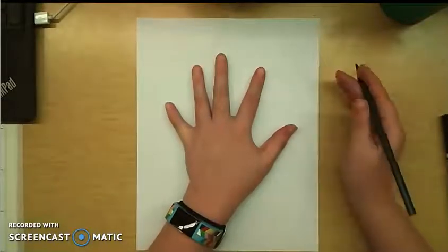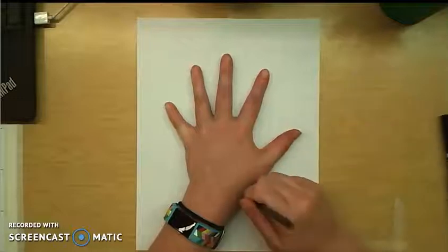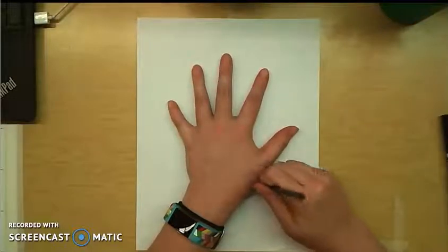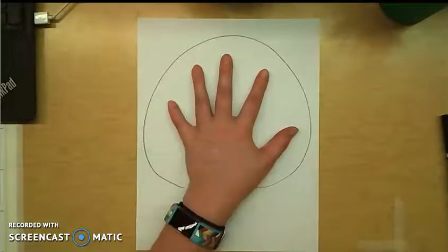So we're going to put our hand in the middle of our paper like this and spread out your fingers. And you're going to draw a circle around your hand. Like that.